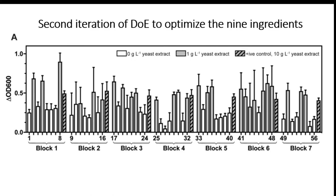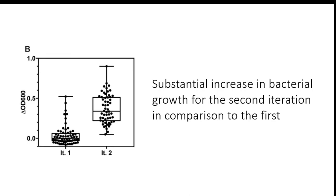Once the key ingredients were screened, the authors conducted a second iteration of DOE with the goal of optimizing the concentrations of all 9 ingredients that were shown to have the largest influence on bacterial growth. In just 56 trials, the authors observed a substantial increase in bacterial growth for the second iteration in comparison to the first.